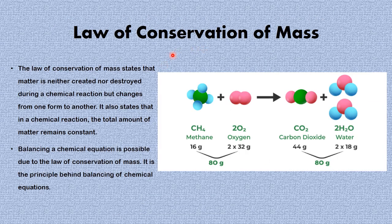Now let's look at the basis for which we balance chemical equations: the law of conservation of mass. The law of conservation of mass states that matter is neither created nor destroyed during a chemical reaction, but changes from one form to another. It also states that in a chemical reaction, the total amount of matter remains constant. Balancing a chemical equation is possible due to the law of conservation of mass — it is the principle behind balancing chemical equations.